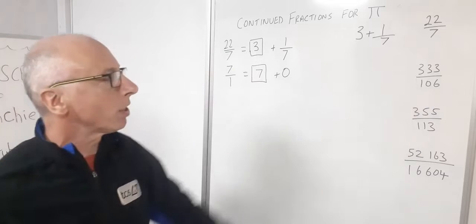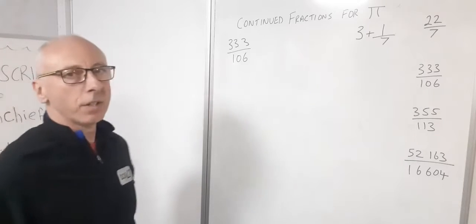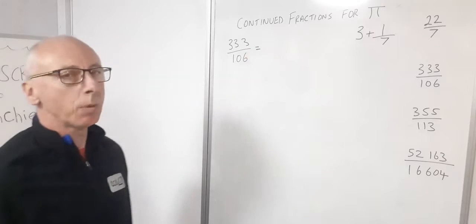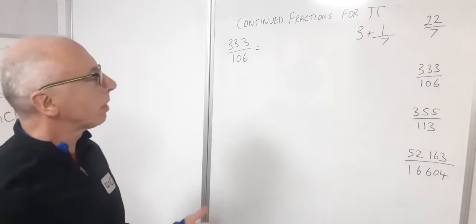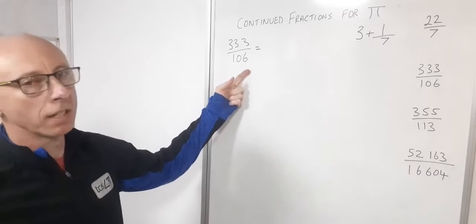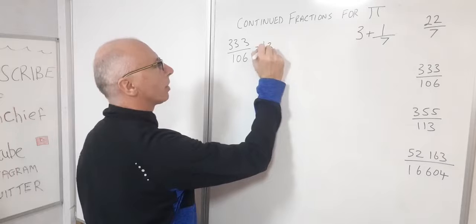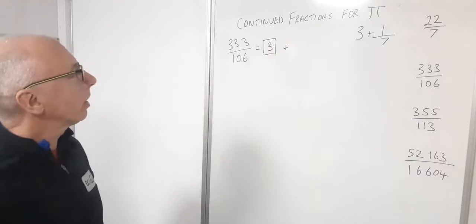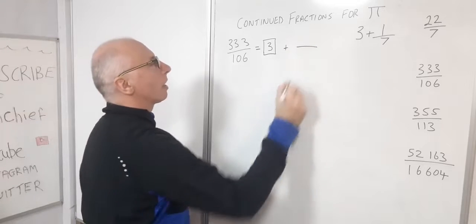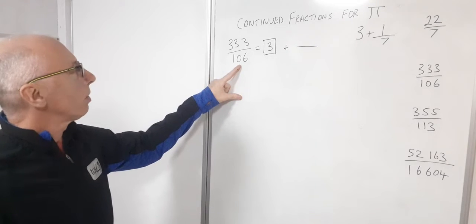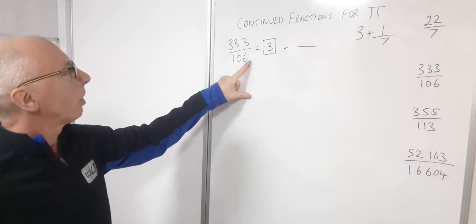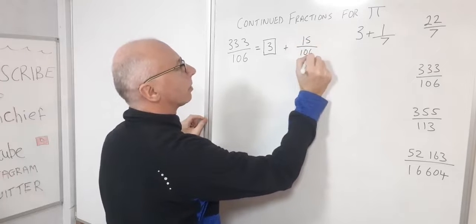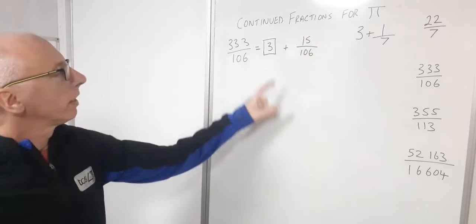Now we're going to look at one a little bit more interesting. 333 divided by 106. As we're approximating pi we can pretty much almost guarantee that this first integer has to be 3, otherwise it's not going to be a very good approximation. So we got a 3 and then find out our remainder. Our remainder is going to be, 3 times 106 is 318, so therefore we've got 15 over 106 as our remainder. That's that line finished.